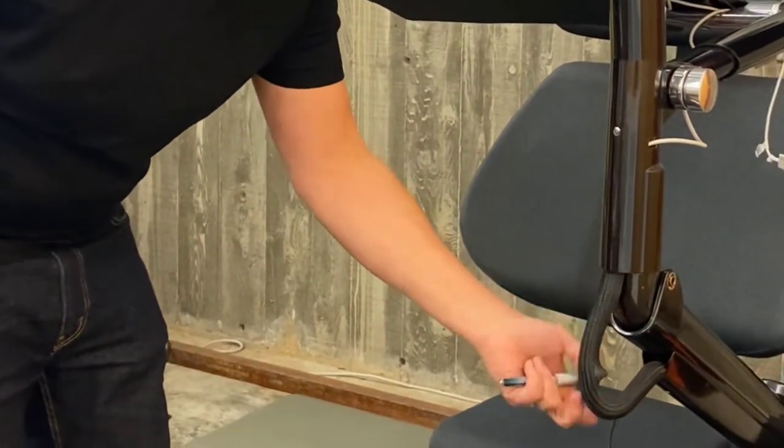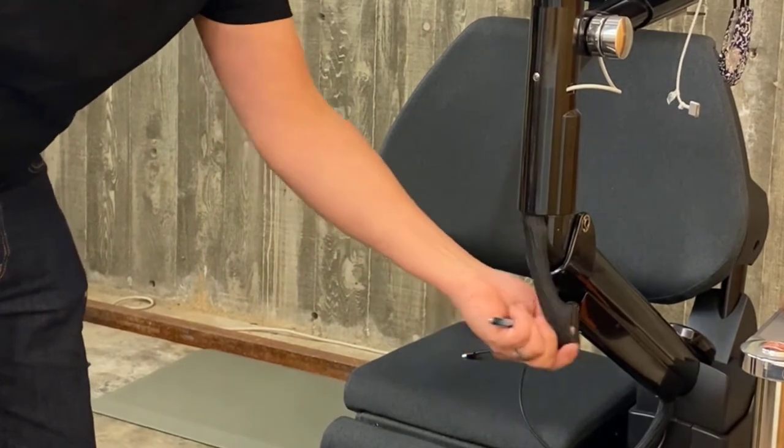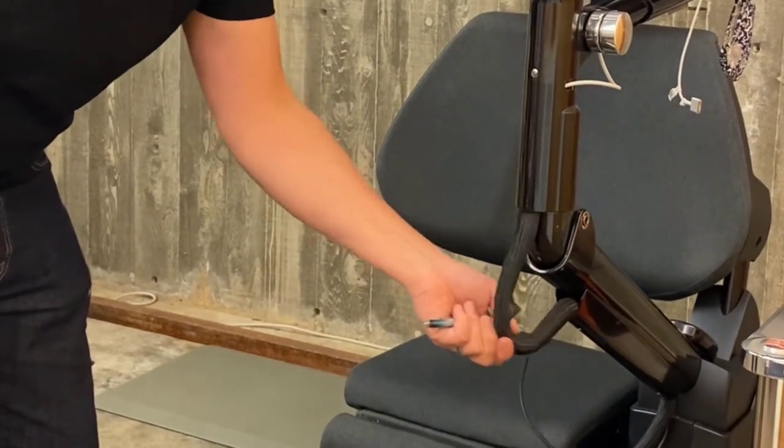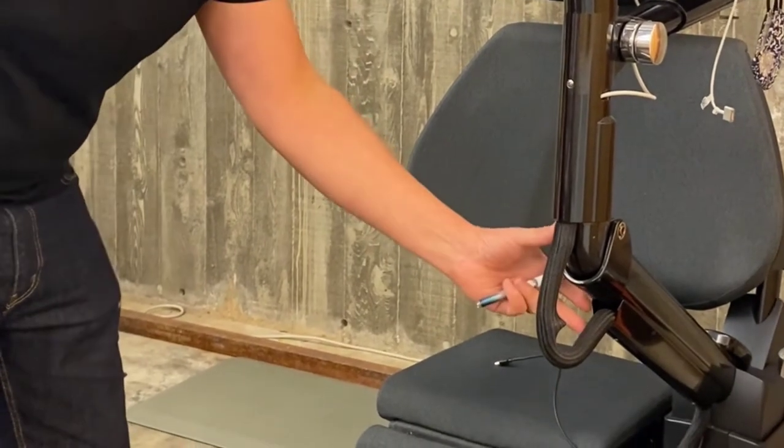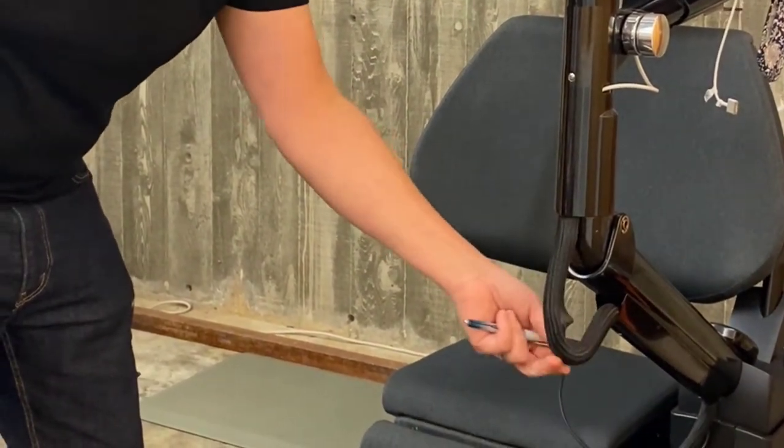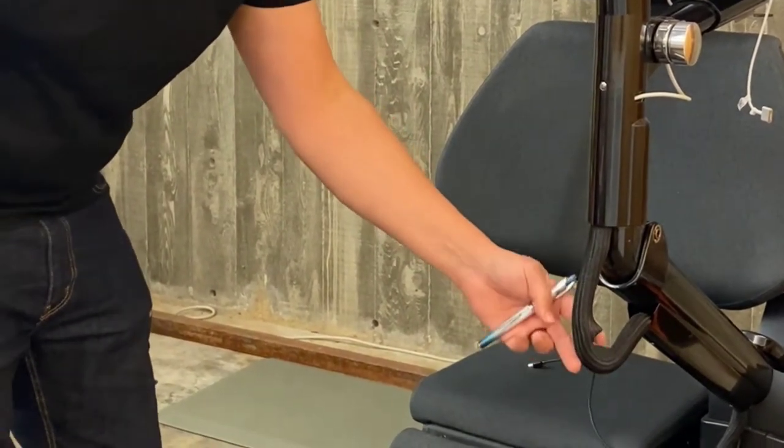When you're running your cables, make sure you use the standard length we've put here for a service loop to make this nice and free. When the Altwork station reclines, this gets tighter, so you want to make sure you don't strain your cables. Just follow what we have put in there already, and you'll be fine.